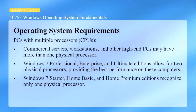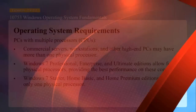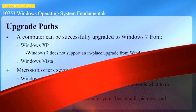Looking at further operating system requirements: commercial servers, workstations, and other high-end PCs may have more than one physical processor. Windows 7 Professional, Enterprise, and Ultimate support two physical processors, while the other versions only support one physical processor.